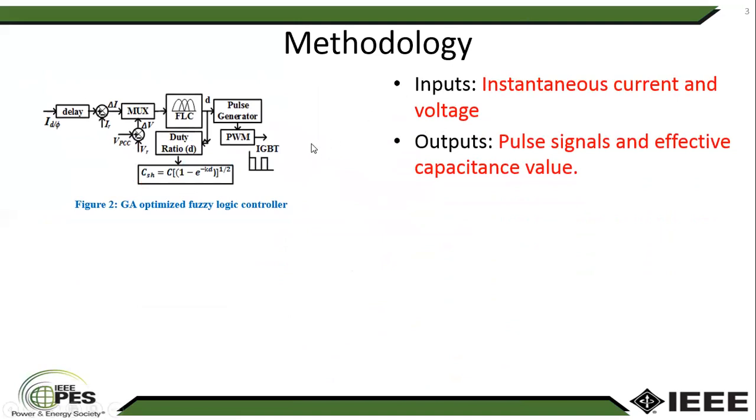The structure of the genetic algorithm optimized fuzzy logic controller is given here. As inputs for the controller, we used instantaneous current and the point of common coupling voltage of the power system. They pass through the control logic of the fuzzy logic controller and produce the outputs of pulse signals for control of the power electronic based switch and also a variable or effective capacitance.